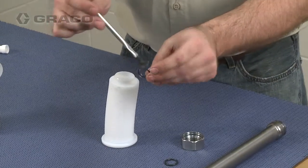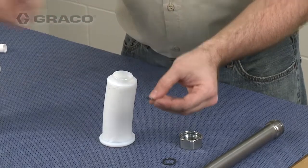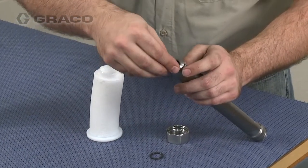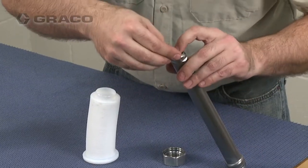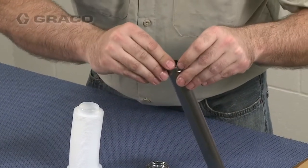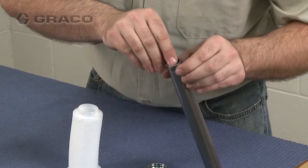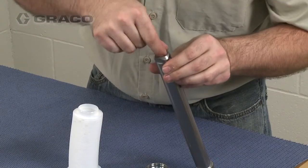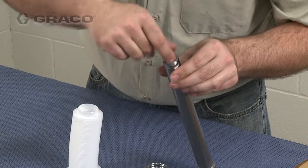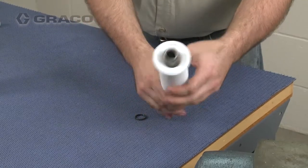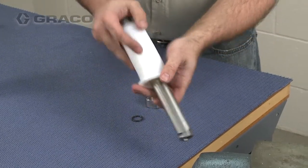Lubricate and install the first o-ring into the inside of the bellows sleeve. Next, slide the bellows onto the bellows sleeve and snap it into place.